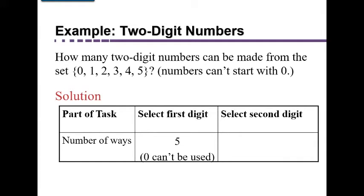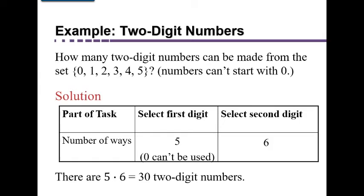Since the problem doesn't say repetition is not allowed, we assume repetition is allowed. Zero is okay as a second digit — we could get numbers like 10, 20, 30, 40, 50 — so there are six options for the second digit. Multiplying 5 × 6 = 30, giving us 30 two-digit numbers.